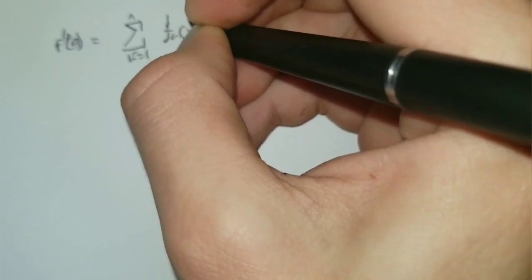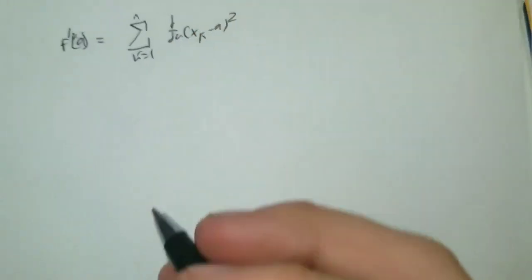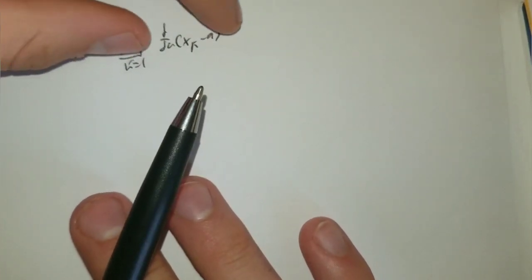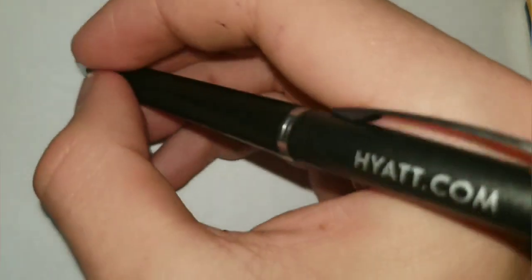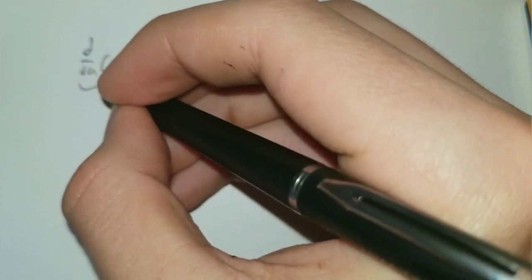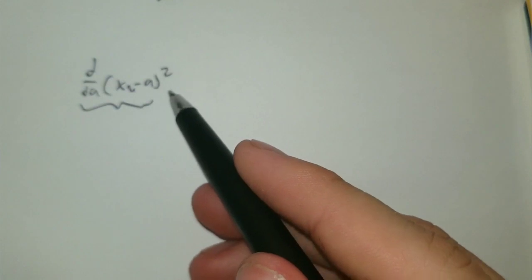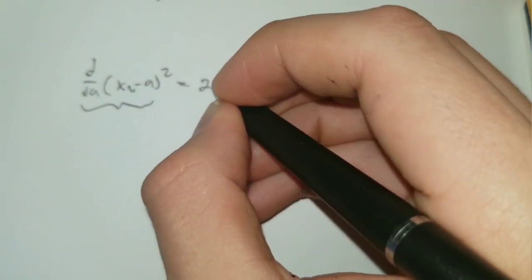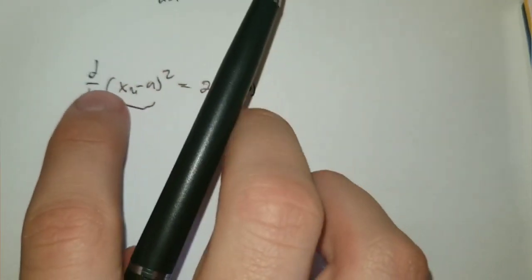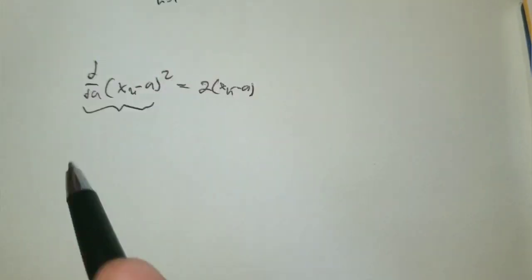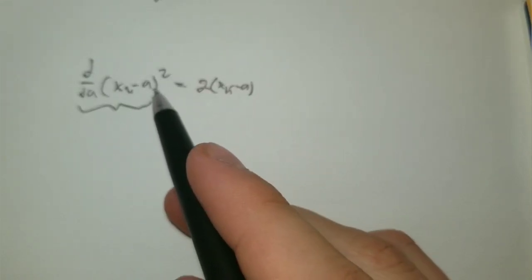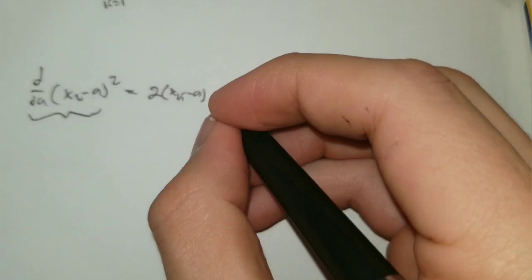of d/da of xk minus a squared. So, you have to take the derivative of xk minus a squared. So, d/da of xk minus a. Let's look at this. We can use chain rule. Multiply from the derivative of outside, times the derivative of inside. derivative of xk is just a constant minus derivative of a is negative one so I have to multiply negative one which is negative two xk minus a